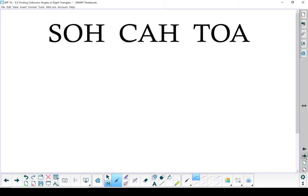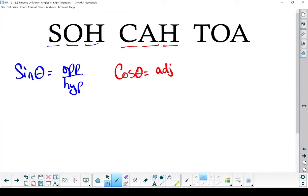Let's start out with the formulas for the three primary trig ratios. We're going to use SOH CAH TOA to help us remember it. Sine theta is opposite over hypotenuse. Cosine theta is adjacent over hypotenuse. And tangent theta is opposite over adjacent.